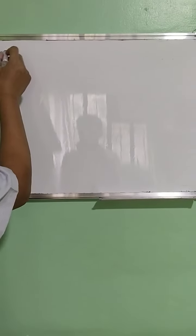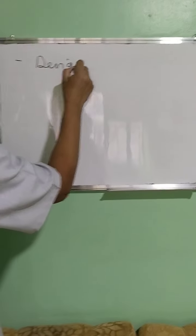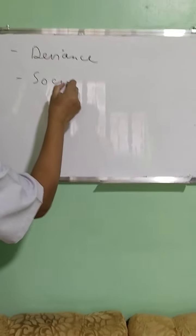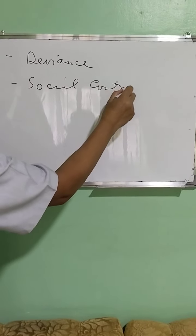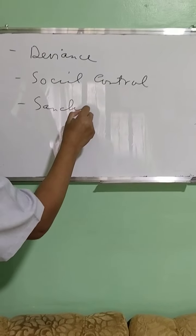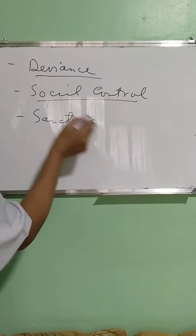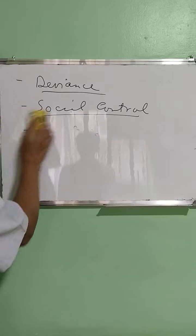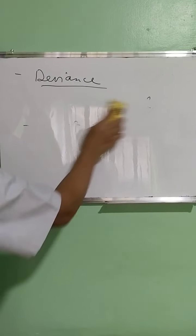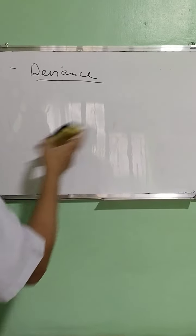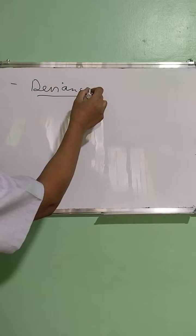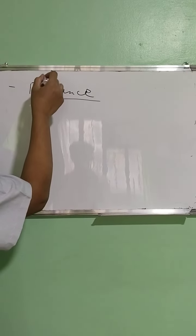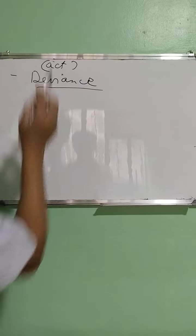So let us proceed now with the discussion of Chapter 3 of your book. We are talking about deviance, social control, and sanctions. As an overview, I have to define each one so that you will have an idea what deviance is, what social control is, and what sanctions are. When we talk simply of deviance, what comes to your mind? Well, this is the act itself. When we talk of deviance, we are talking about the act.